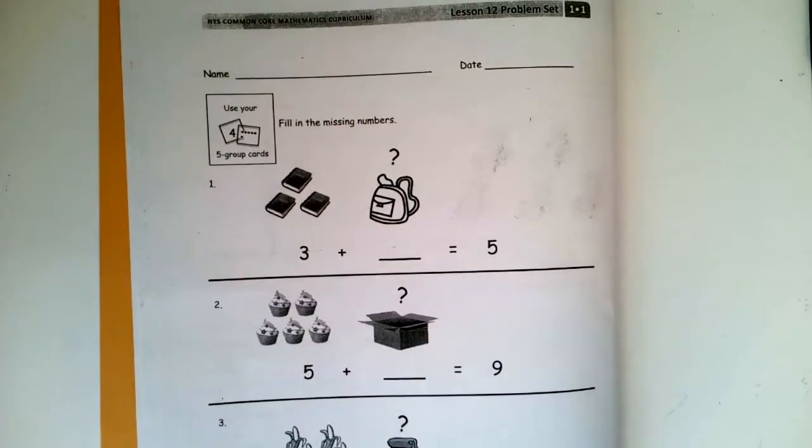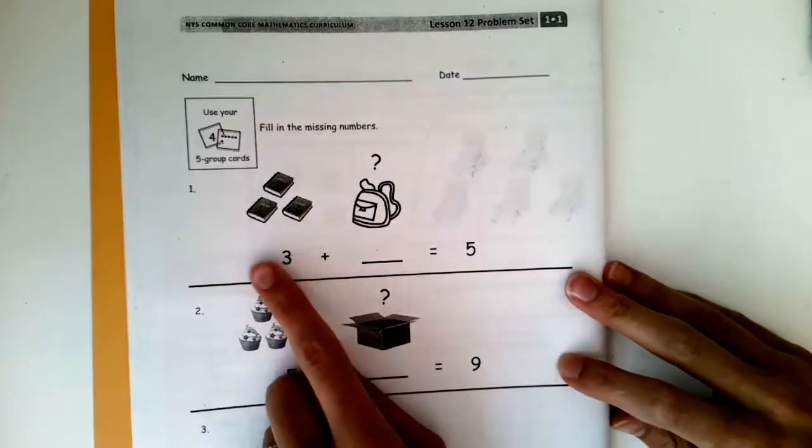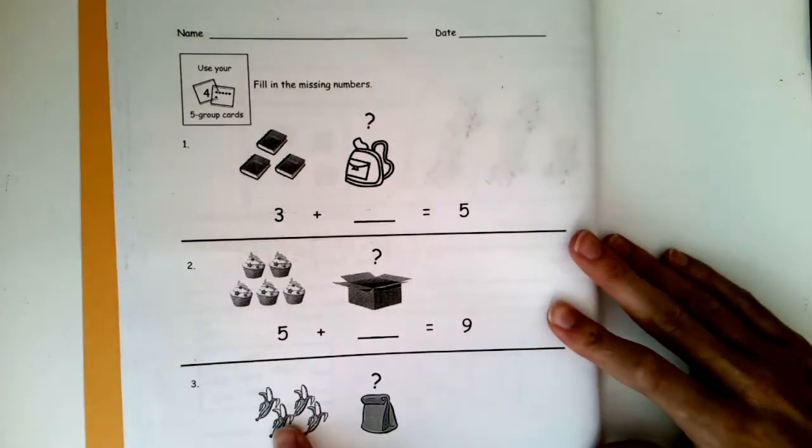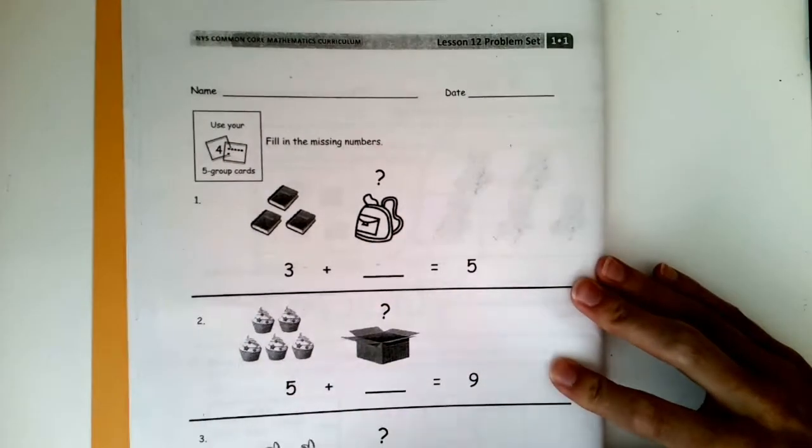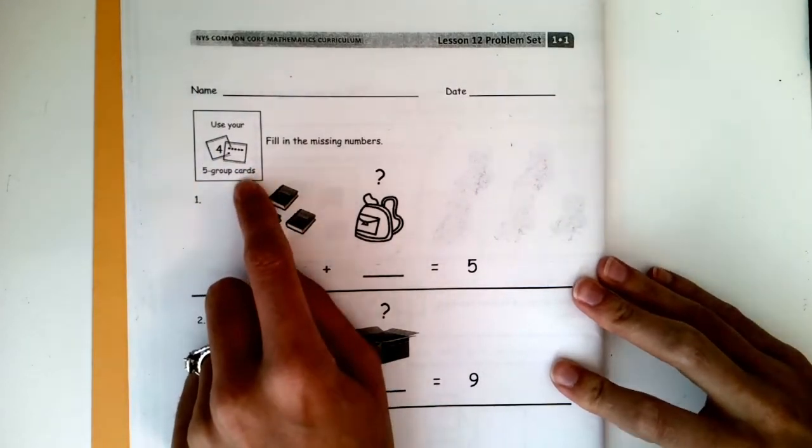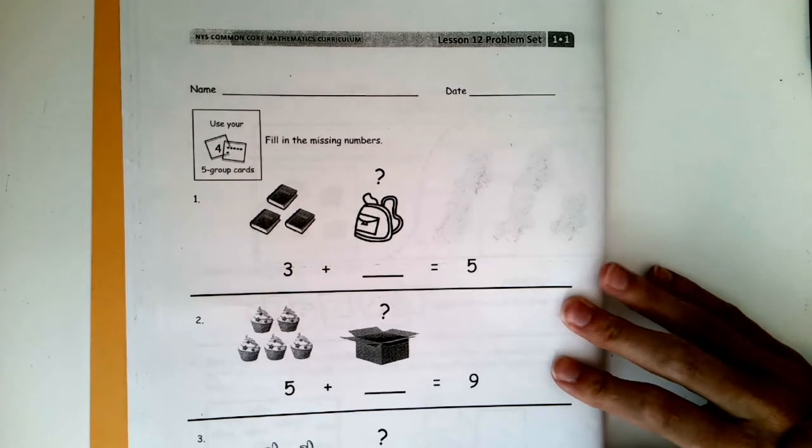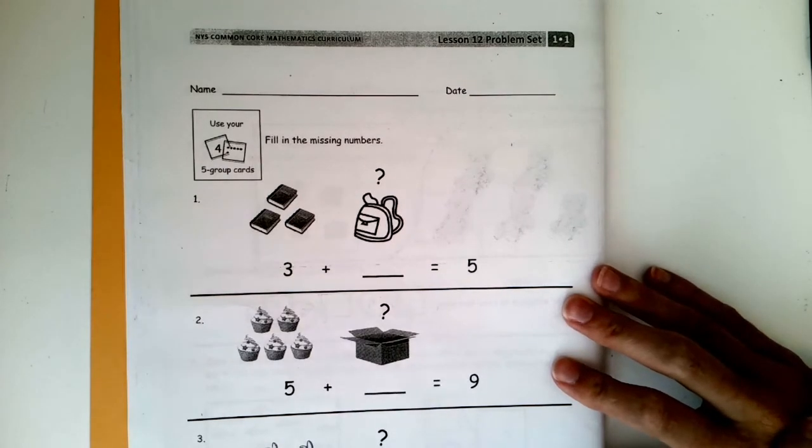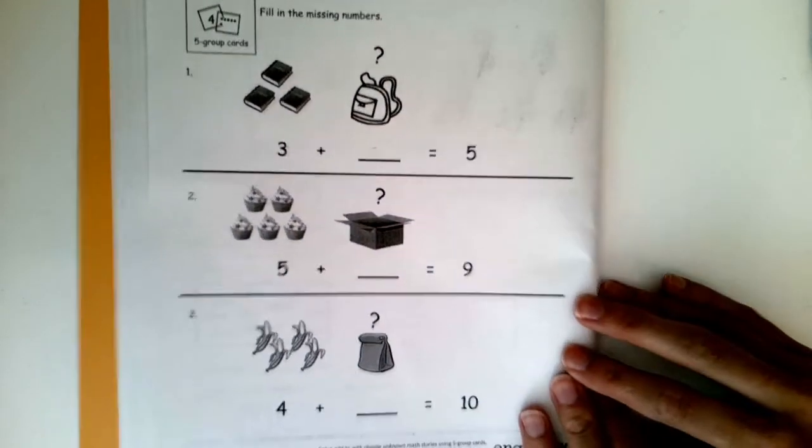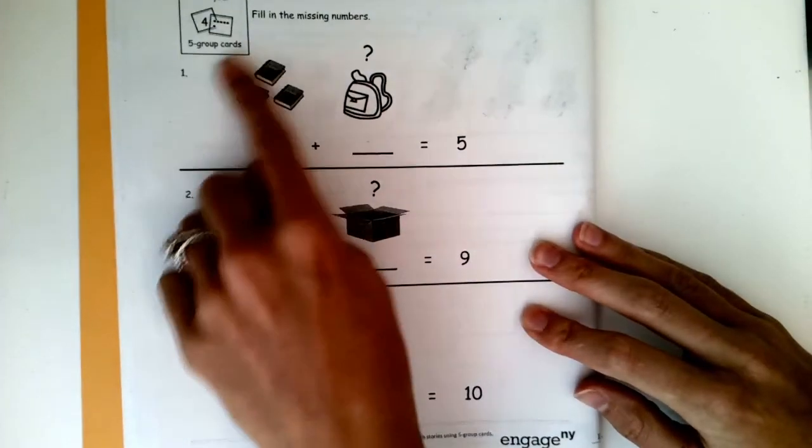Go ahead and get your math book. You want the lesson 12 problem set that has books and cupcakes and bananas on it. Books, cupcakes, and bananas. Now this tells us to use our five group cards, but we don't have those. We have other strategies we can use. Remember how I said sometimes when we're in online learning, we don't have the same things as we would if we were in the classroom. So we have to find other ways that work. And I think we do. We have two other options we can use.